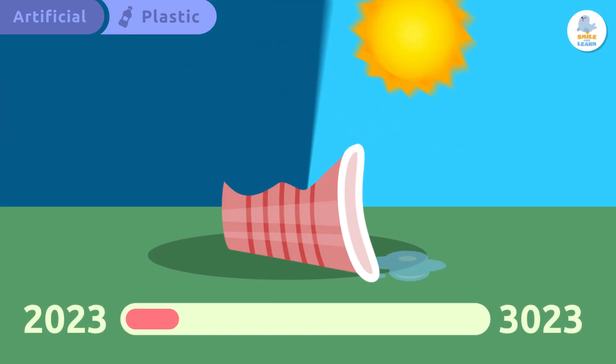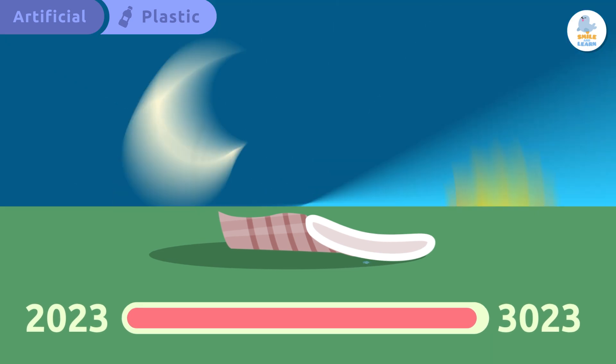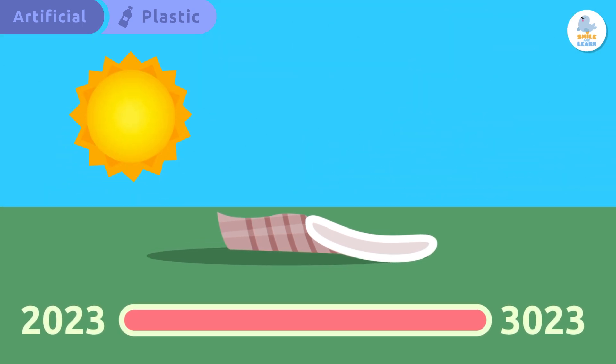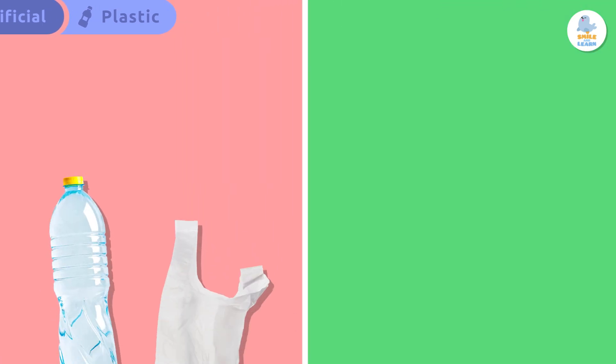Did you know that plastic is one of the materials that takes the longest to completely decompose? It takes between 100 and 1,000 years. That is why it is very important to reduce our use of plastic.